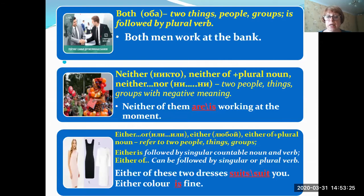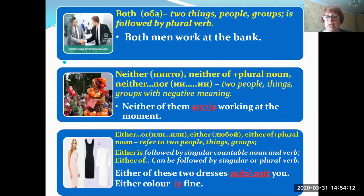The next determinant is 'neither.' We can also use 'neither' in the phrase 'neither...nor,' meaning 'ни...ни.' 'Neither' refers to two people, things, or groups, but with a negative meaning. 'Neither of them is/are working at the moment' — we can use a plural or singular verb depending on whether you mean one person from the group or the whole group. The meaning is: none of them is working at the moment.